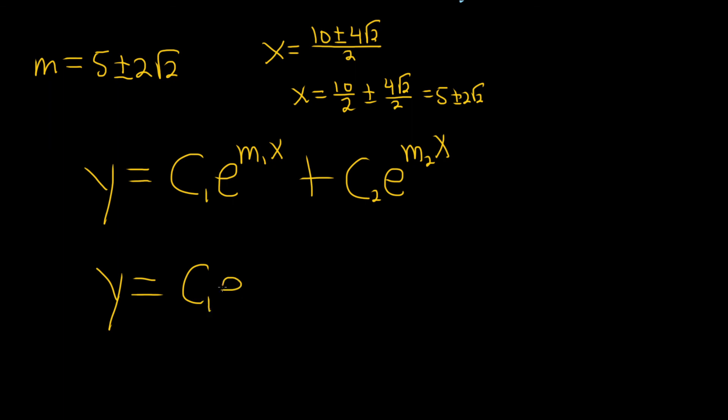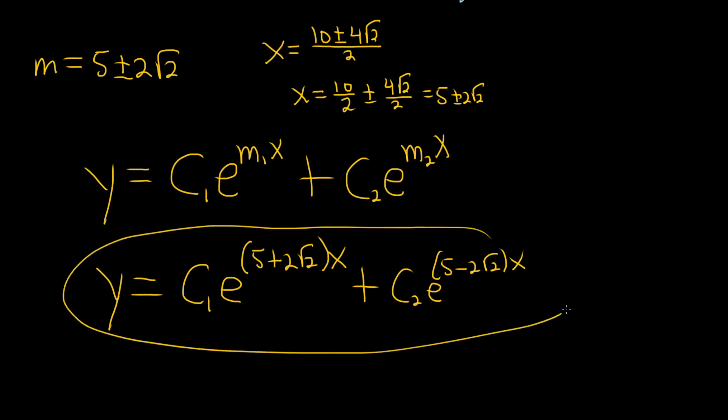So it'll be c1 e to the... let's take the plus first. So it'll be 5 plus 2 square root of 2, and then x. And then the next one would be c sub 2, and then it's 5 minus 2 square root of 2, and then you have your x. So really weird looking answer.